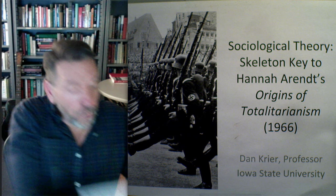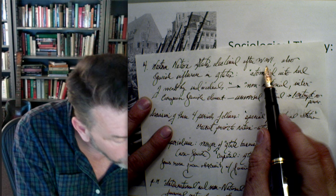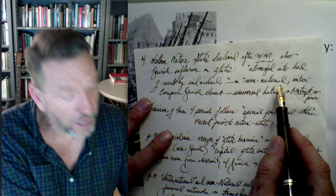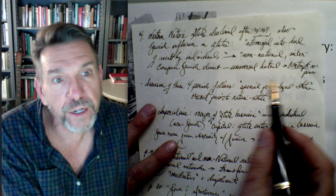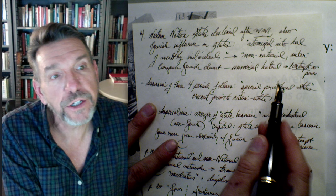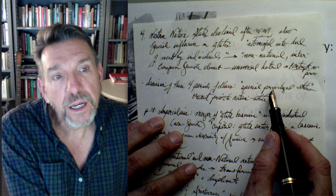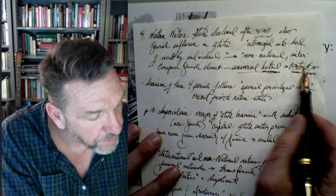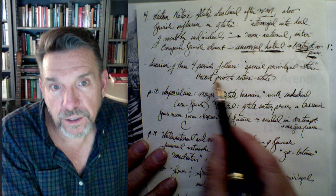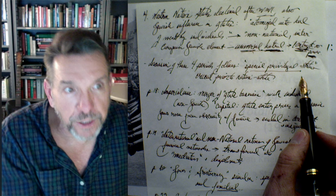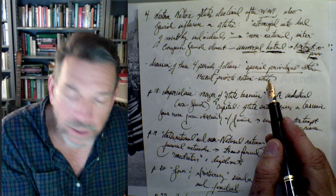Phase four: the period when Western nation states declined after World War I. Jewish influence within those states declines as well, leaving behind what she calls atomized wealthy individuals. The Jews that remain are viewed as non-national, as an inter-European element, and therefore they develop a kind of universal contempt because they have no power. She discusses those four periods from page 18 onward, noting how the special privileged status was crucial for Jewish people both prior to the nation state, during it, and as it ends.